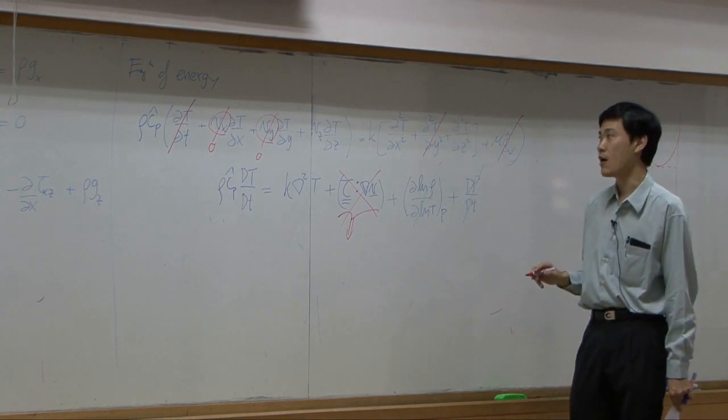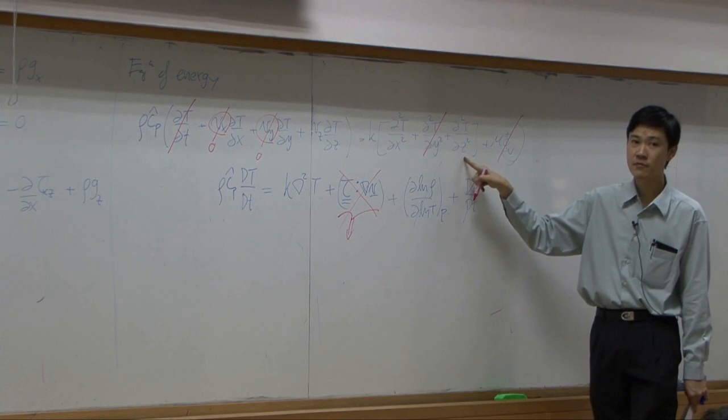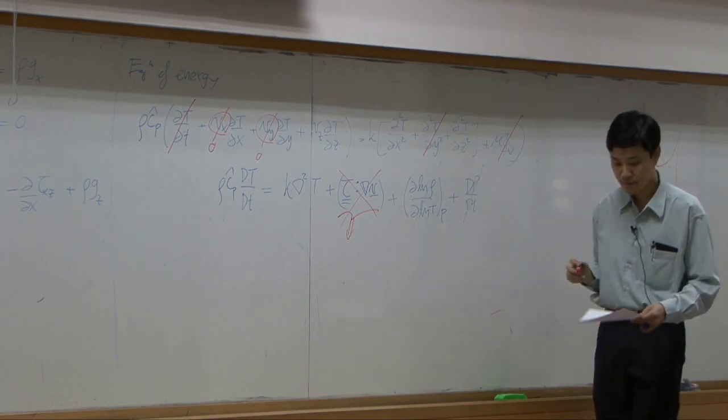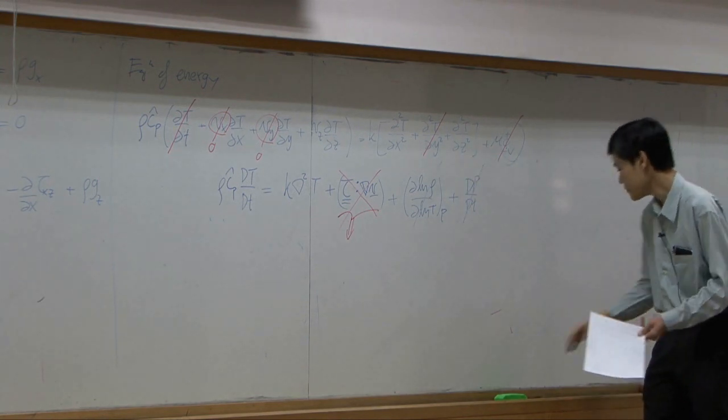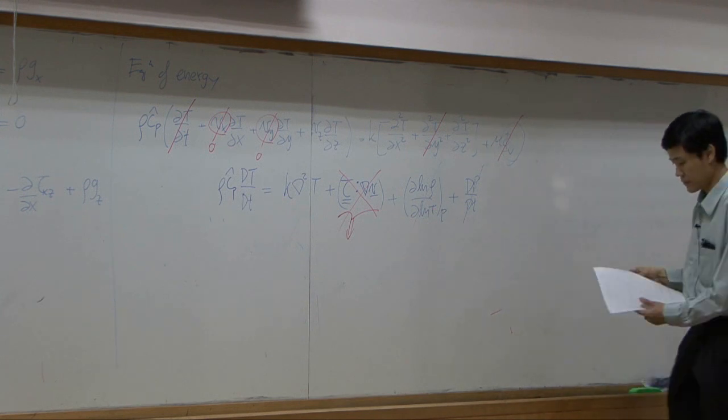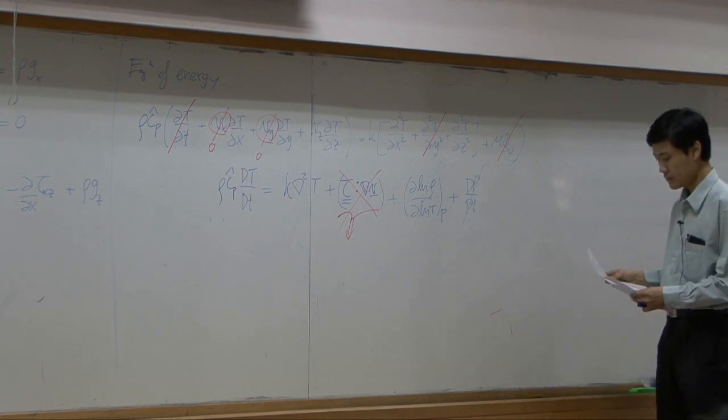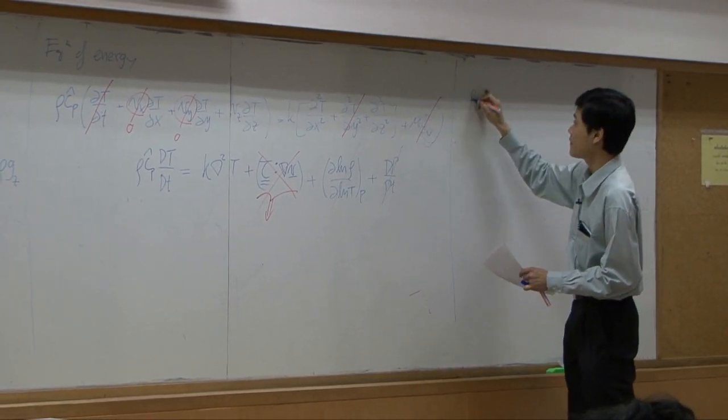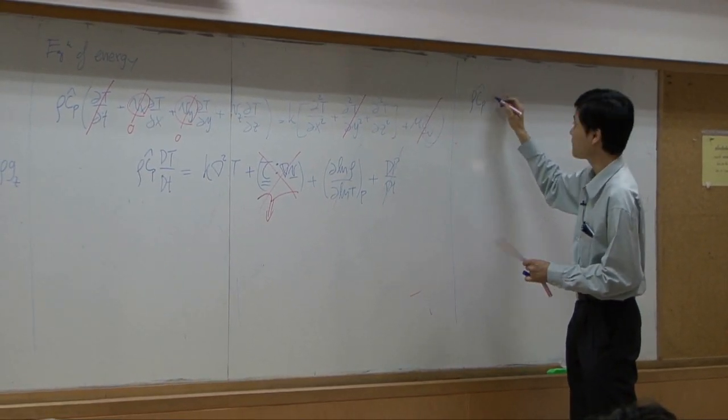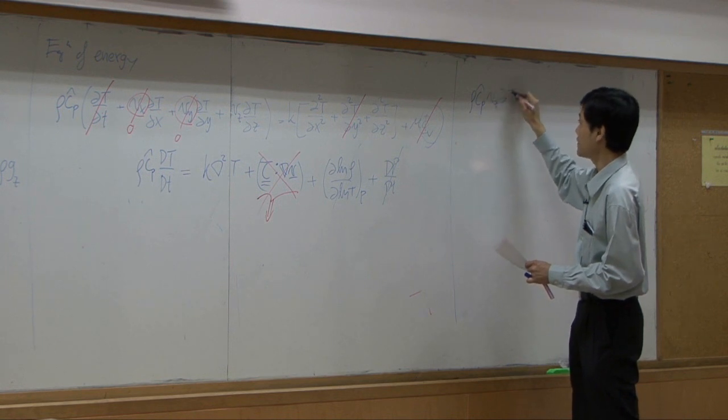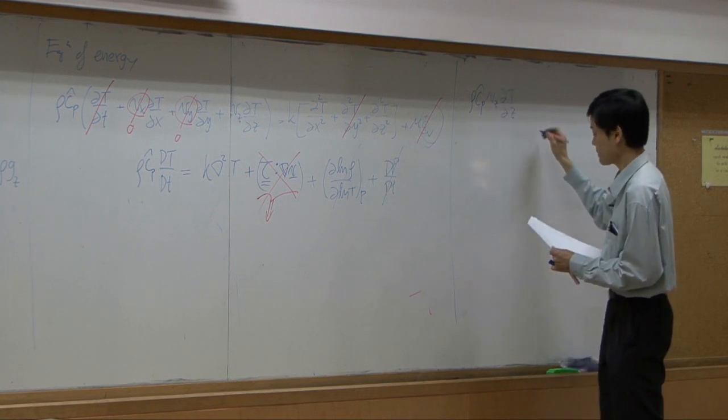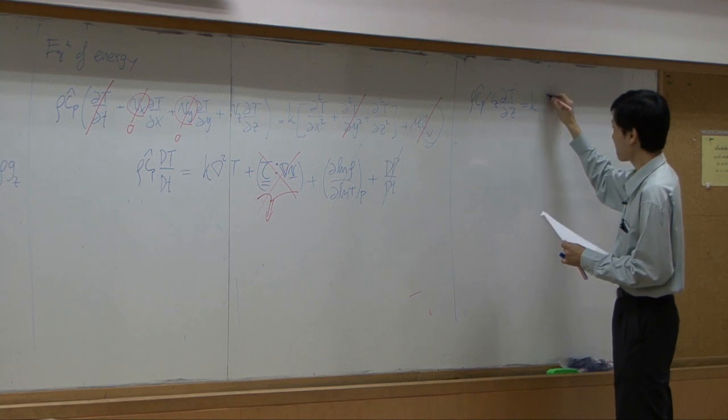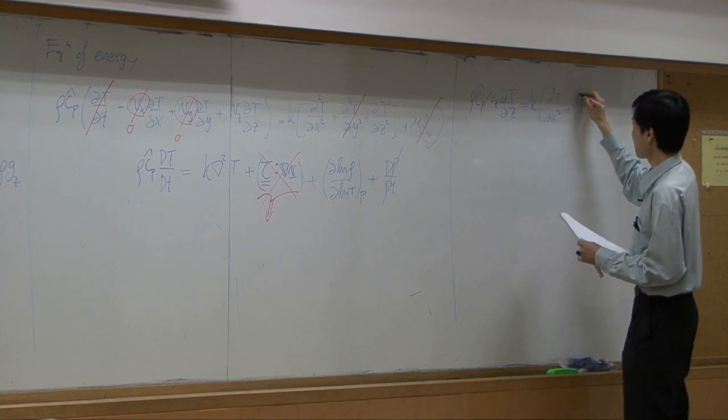Temperature change with respect to X does not change, with respect to Y does not change, with respect to Z this one must be kept. At the end, you have rho CP Vz dT by dZ.